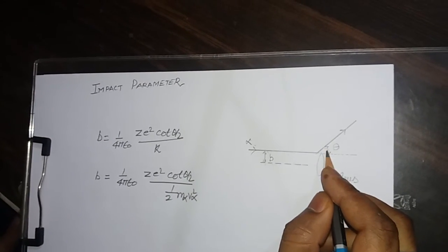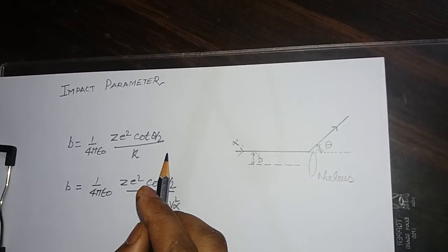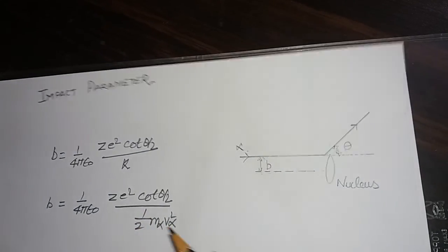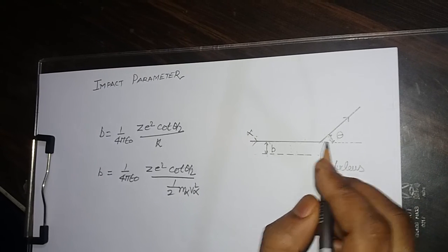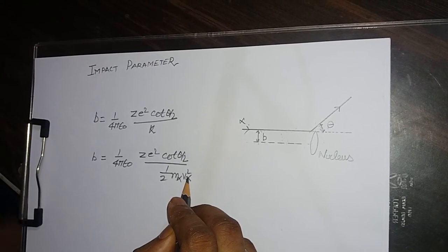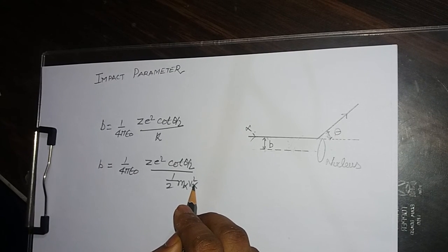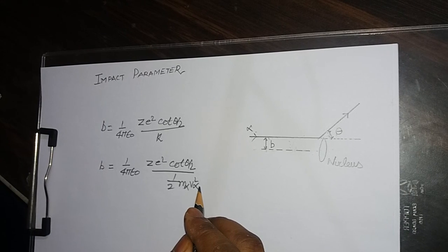Theta is the angle of scattering. What is ze? ze is the charge on the nucleus. m_alpha is the mass of the alpha particle, and v_alpha is the initial velocity of the alpha particle.